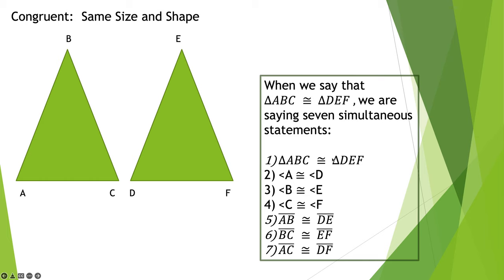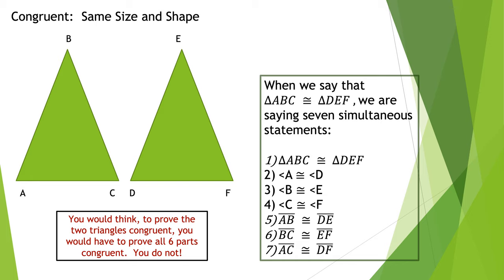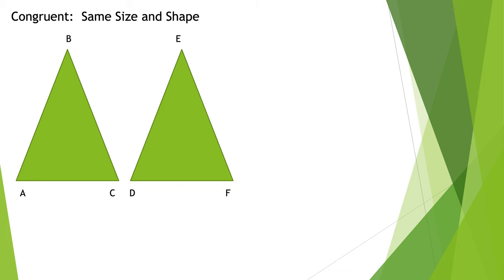So when we would say that one triangle is congruent to the other, we're really saying these seven statements. But to prove the triangles are congruent, and yes, when we say they're congruent, we're saying those seven things. We're saying the triangles as a whole are congruent, each of the corresponding angles are congruent, and each of the corresponding sides are congruent. We are saying that. However, you don't have to prove all of that to prove they're congruent.